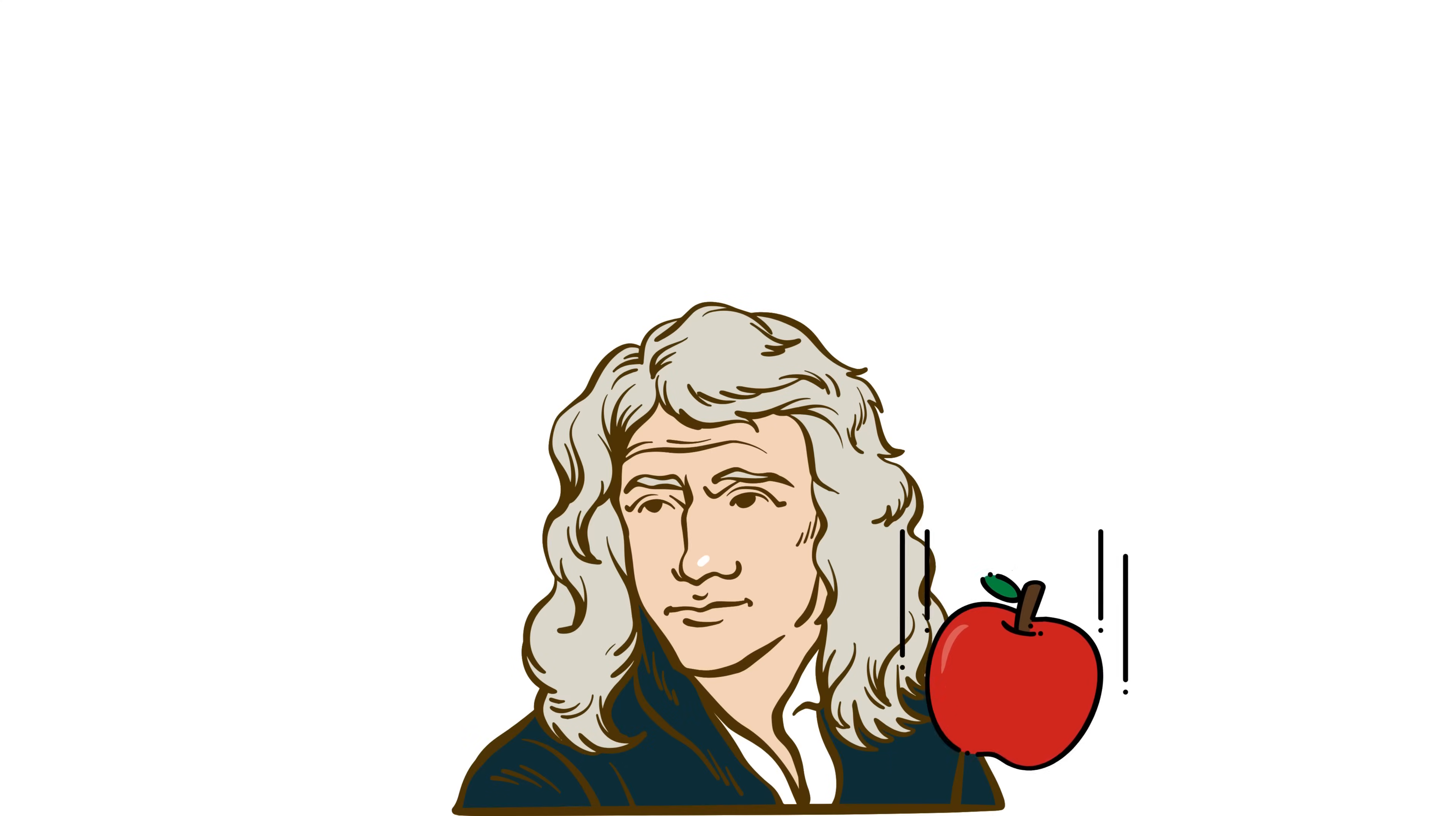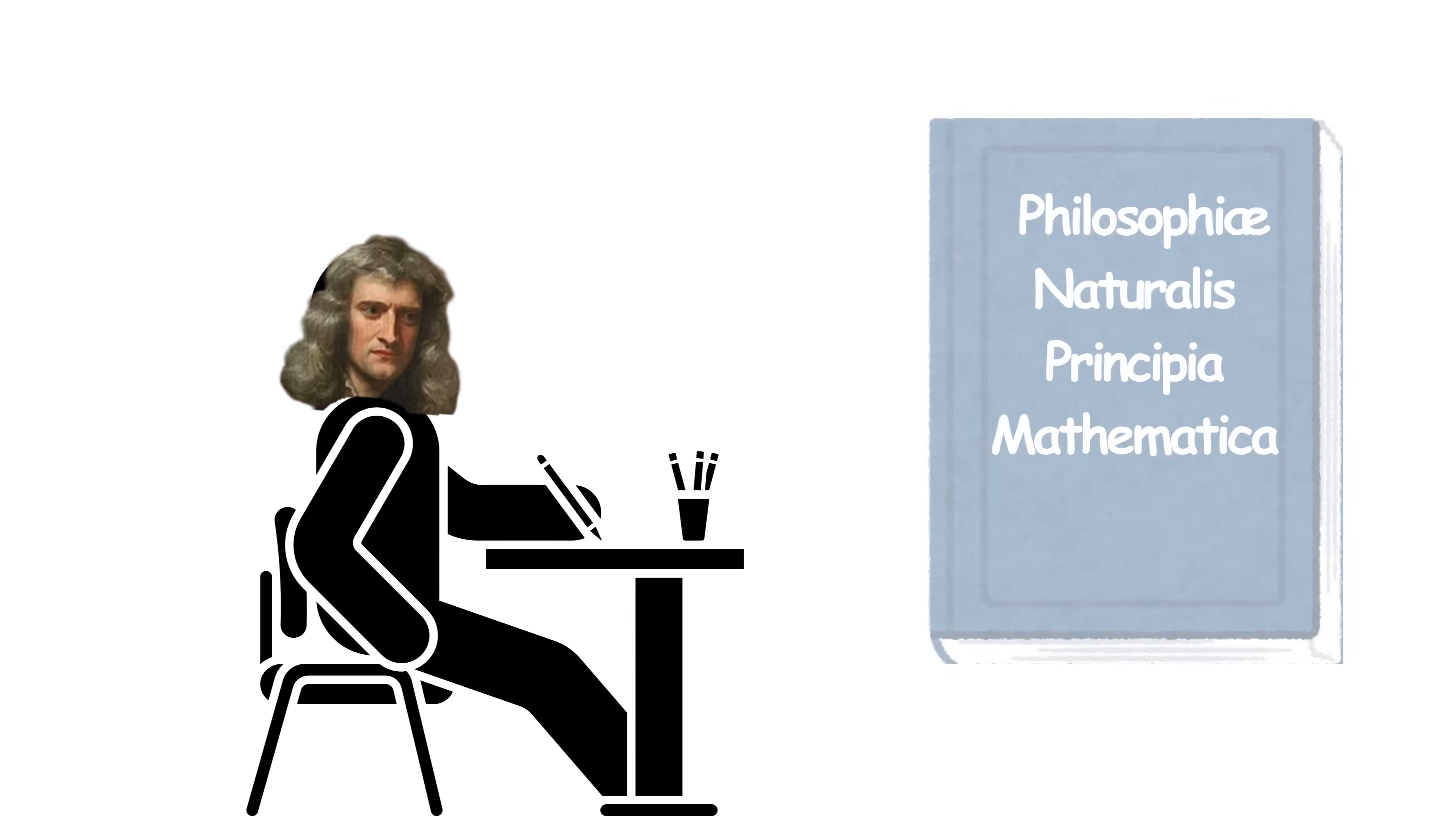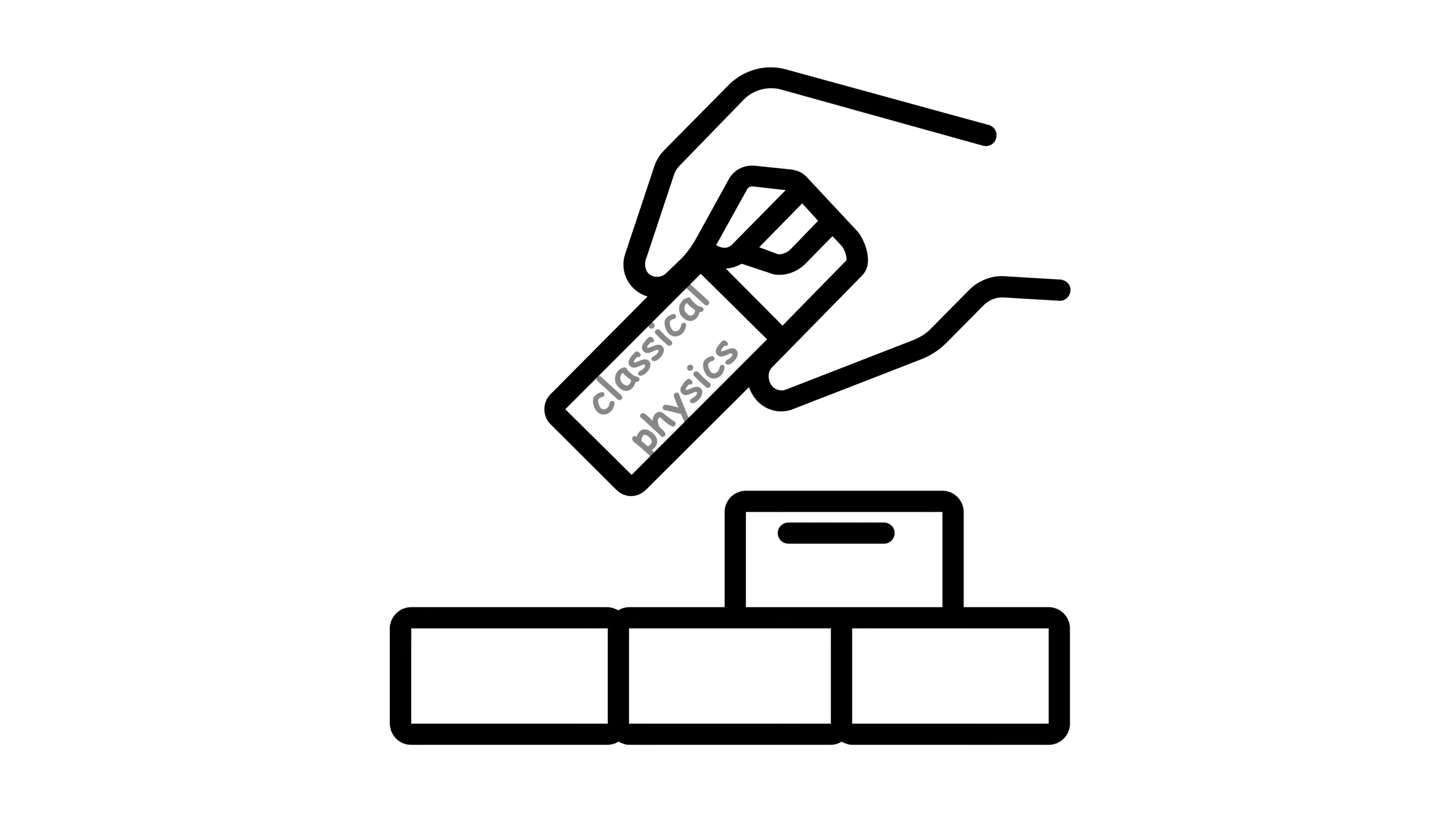This discovery explained both the fall of an apple and the orbits of planets, revolutionizing physics and establishing a mechanistic view of the universe. His work, Philosophiae Naturalis Principia Mathematica, transformed Newton into a monumental figure in science and laid the foundations of classical physics.